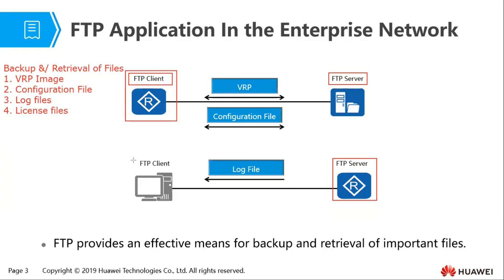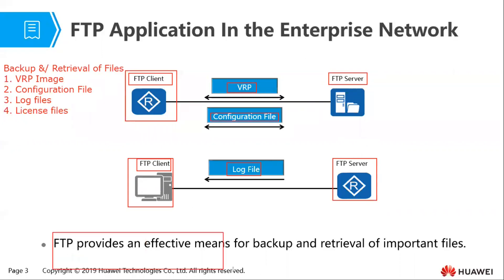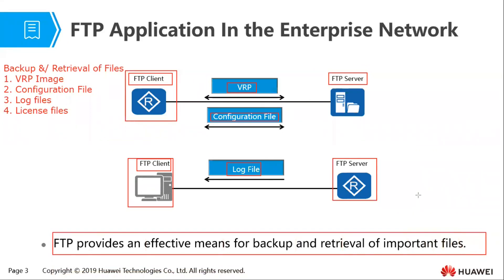For example, your network management system might want to download the log files from your router, so you have to configure your router as an FTP server. Your network management device will then act as the client. You will either backup or restore files such as the VRP image file or the configuration file between the server and the client. FTP provides an effective means for backup and retrieval of important files, which is considered a daily operation in an enterprise network.